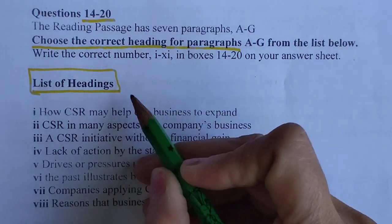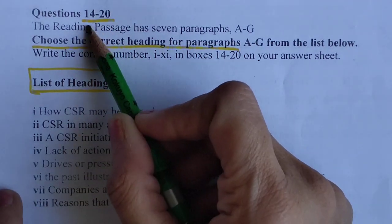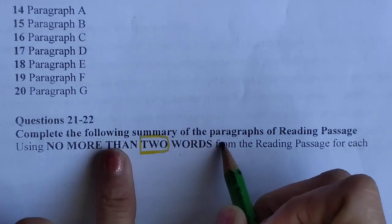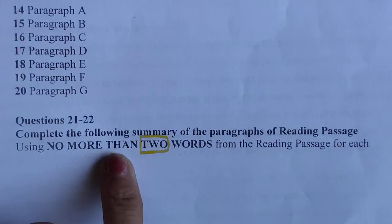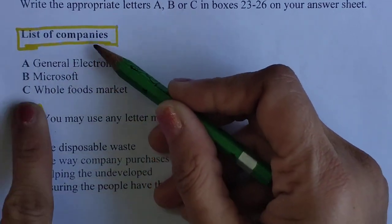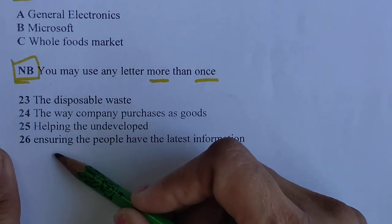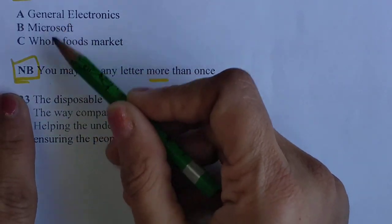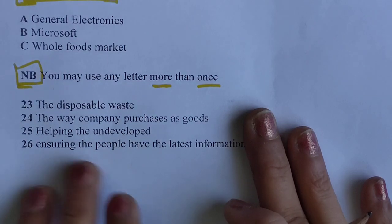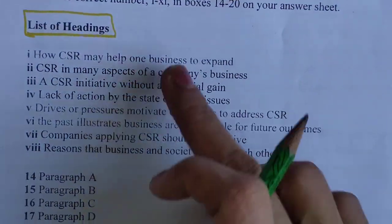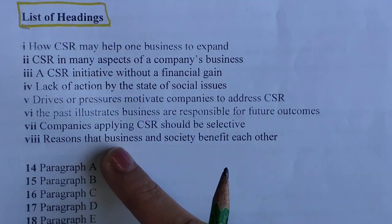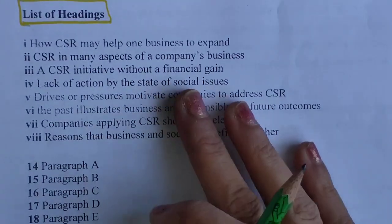We have list of headings questions from questions 14 to 20. The next type of question is no more than two words — complete the following summary of the paragraphs of the reading passage. The third type of question is a list of companies — similar to a list of people type question. Instead of people, they have given company names and you have to match with four statements. You can use the company letter more than once. There are eight headings but only seven paragraphs, so one heading will be extra.